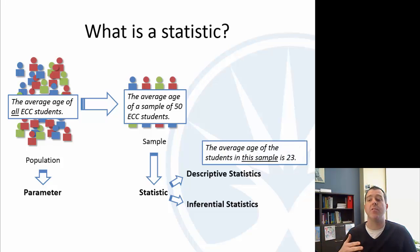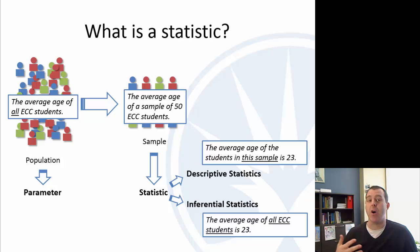So descriptive would say, the average age of students in this sample is 23. Inferential would then be saying, well, based on that, I would say that the average age of all ECC students is 23. So descriptive is just factual based on data that's been collected. Inferential is extending that, kind of drawing a conclusion and extending that to the greater population.